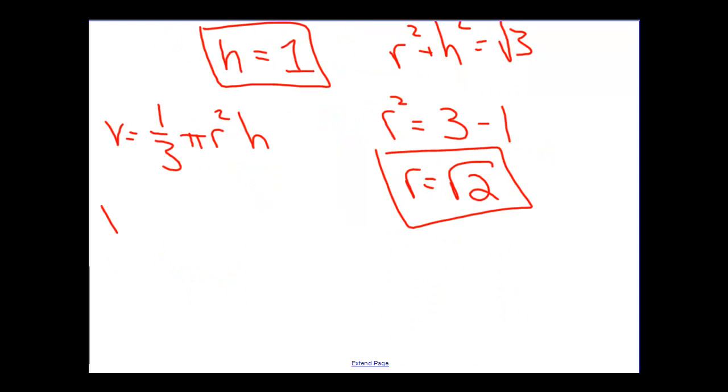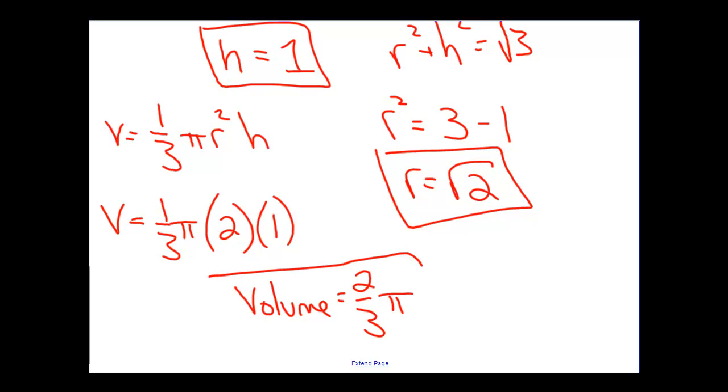So in this particular case, the volume will be one third pi. The square root of 2 squared will simply be 2, and H is 1. So our volume, the maximum volume that we can construct, will be a volume of 2 thirds pi.